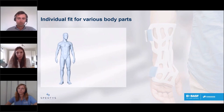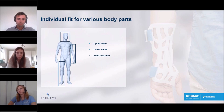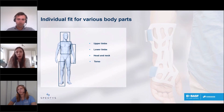Orthopedic and prosthetic applications can be needed for various body areas. Firstly, upper limbs such as the hand, elbow, and forearm. Secondly, lower limbs including legs, knees, ankles, and feet. Another application area is the head and neck, and lastly the torso, which includes the back and chest. As you can see, orthoses and prostheses can be applied to basically all parts of the body and have a very wide field of application.